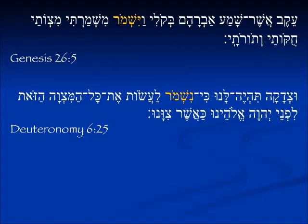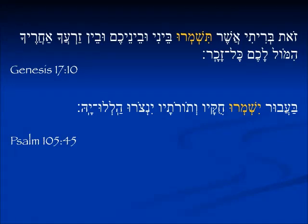In Deuteronomy 6:25 we see the form for 'we will guard' — righteousness will be for us because we will keep to do all this commandment. For second person plural masculine in Genesis 17:10, talking about the circumcision: 'Zot briti asher tishmeru' — this is the covenant which all y'all will keep, between me and you and your offspring after you. In Psalm 105:45 we see the third person plural — 'they will keep his statutes and his Torah.'